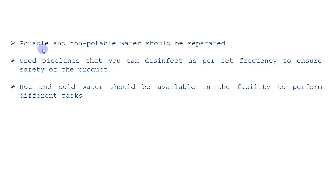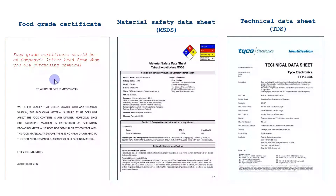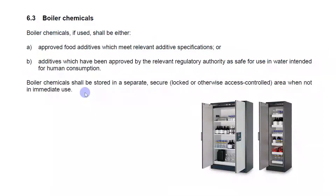Now let's go to clause 6.3, which is boiler chemicals. If you are using boiler chemicals in your facility, they should be food-additive approved — in common terms, food-grade chemicals. For this, you must have: a food-grade certificate for the chemical, a material safety data sheet (MSDS), and a technical data sheet. If you have all three documents for that chemical, you are qualifying this requirement. The second point is that chemicals should be under lock and key, and only specific authorized persons should have access.